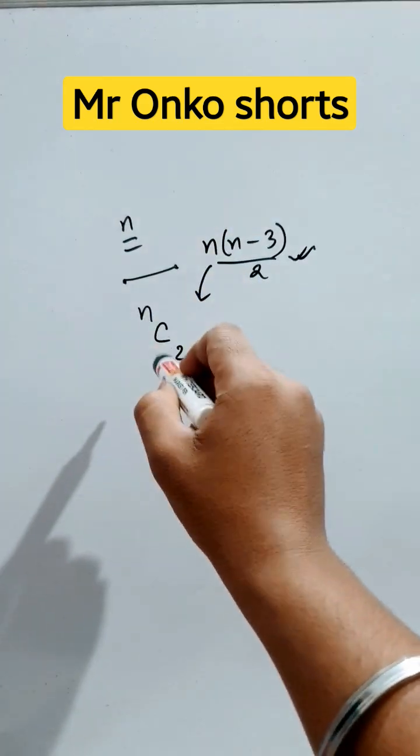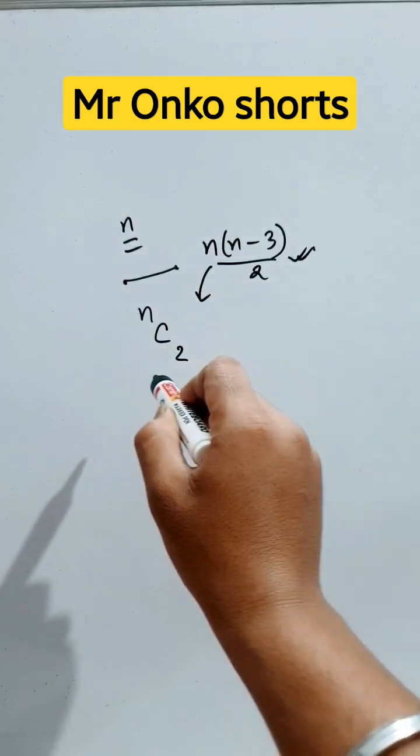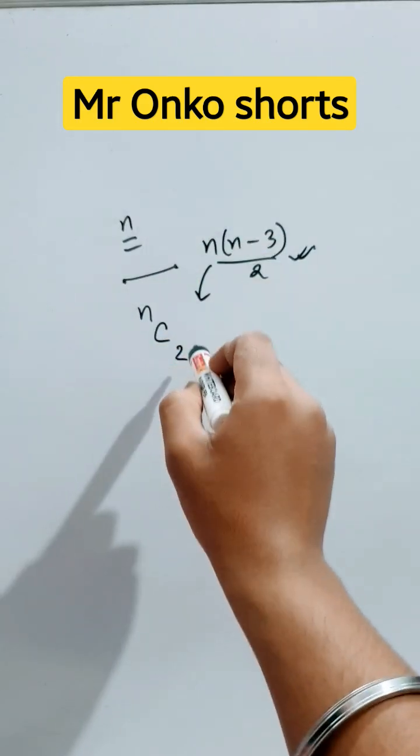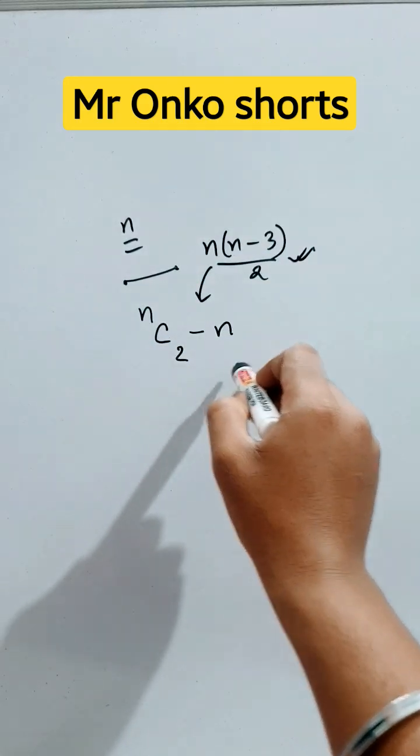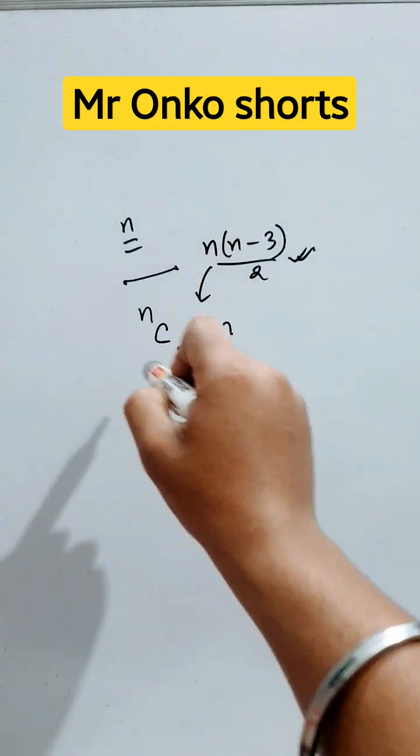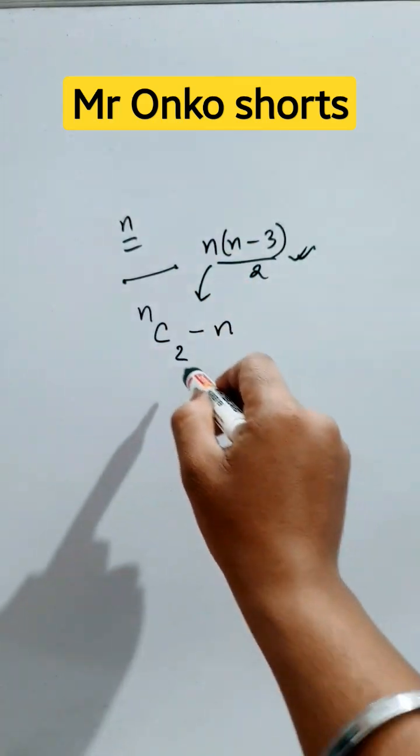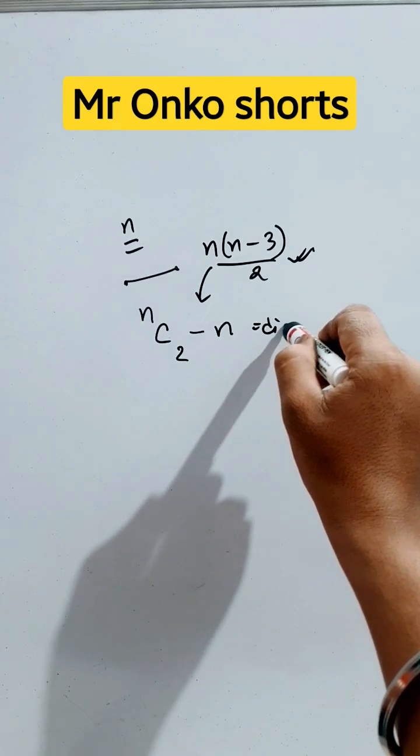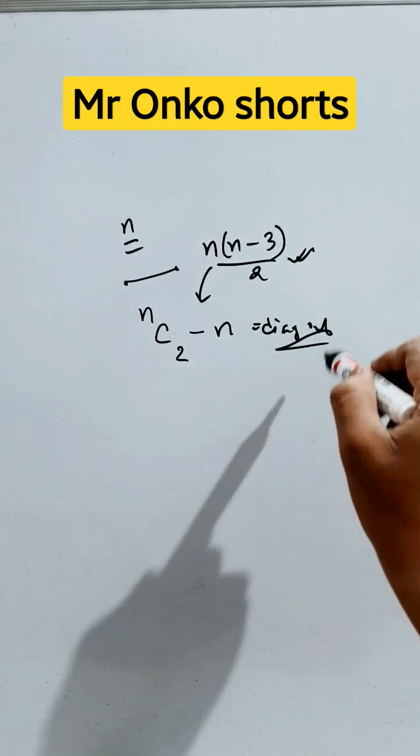It may be the side of the polygon or the diagonal. So we have to subtract the number of sides from the straight lines possibly drawn. Then it will be the number of diagonals.